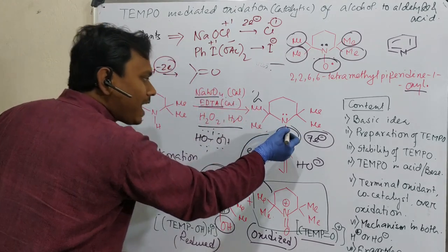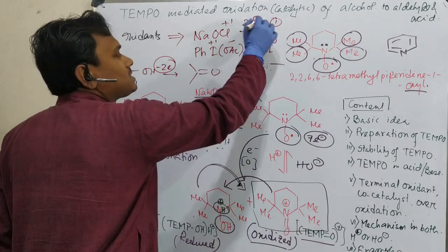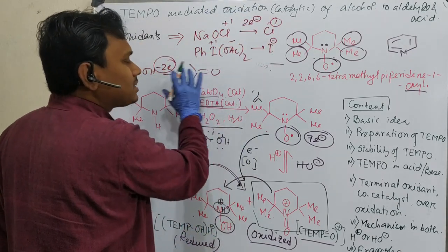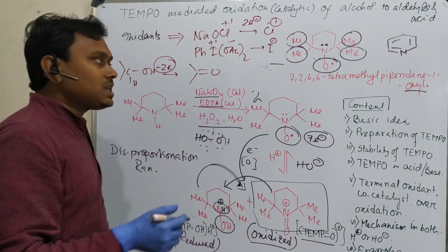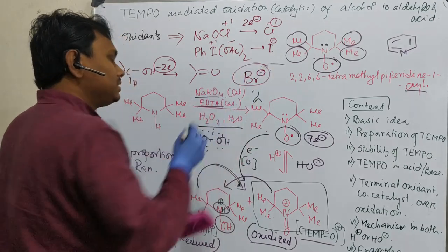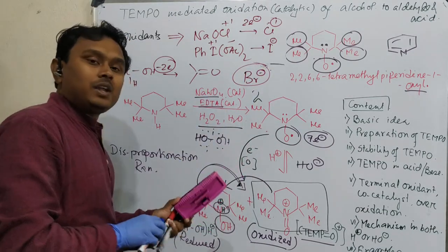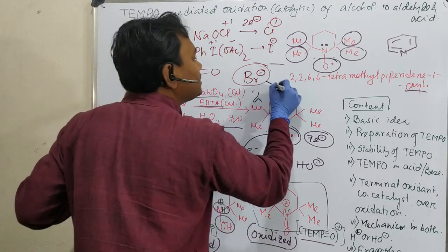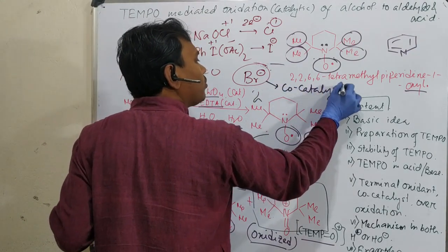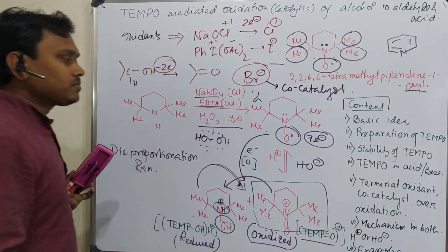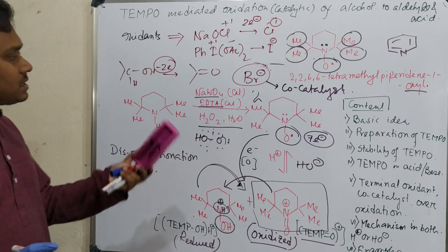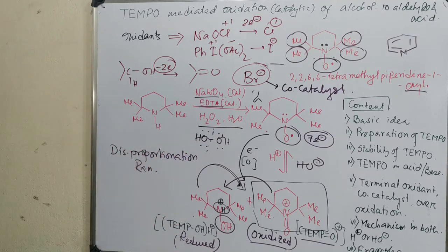These 2 electrons are supplied by initially TEMPO and actually overall by the reaction that is alcohol to ketone or aldehyde. It is also a 2-electron process. These 2 electrons, via TEMPO which acts as the catalyst, are consumed by this. This is the terminal oxidant. For this process, bromide ion acts as co-catalyst.